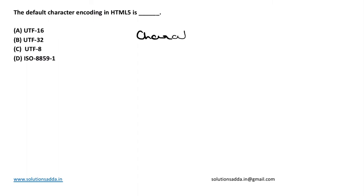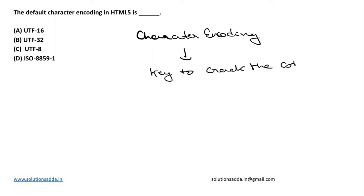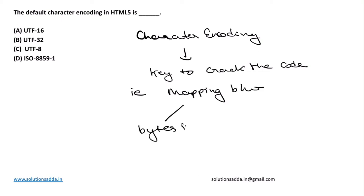So what is character encoding? Character encoding is key to track the code, i.e., it's a mapping between bytes in your computer to characters in a character set.